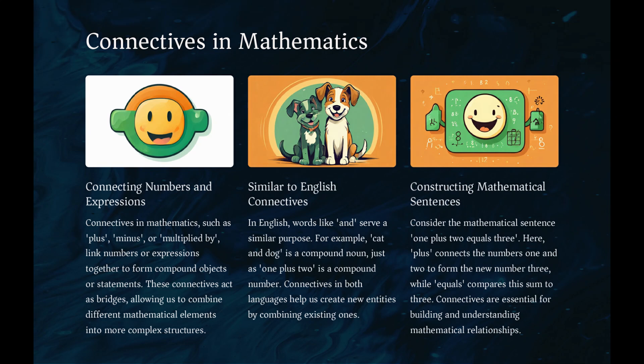Connectives in mathematics, such as plus, minus, or multiplied by, link numbers or expressions together to form compound objects or statements. In English, words like and serve a similar purpose.